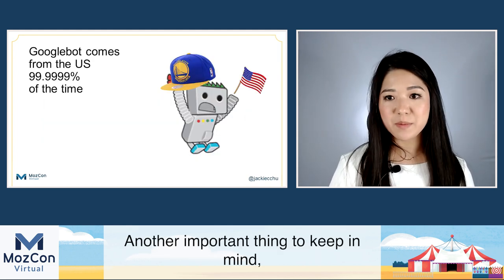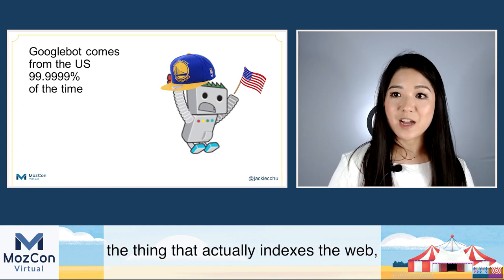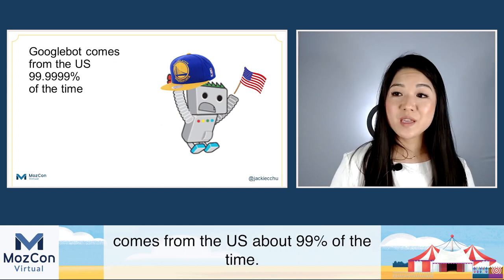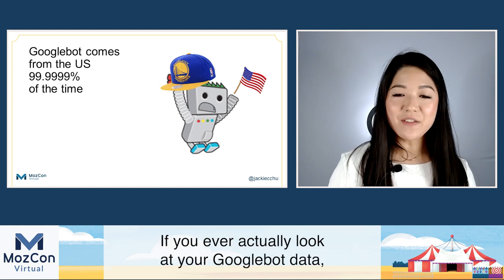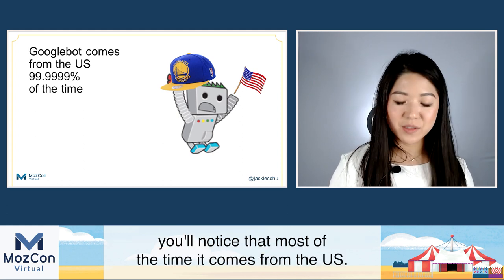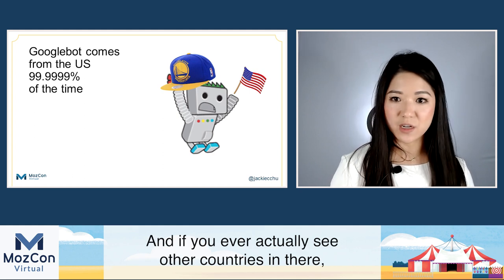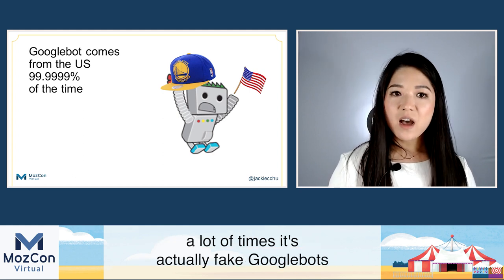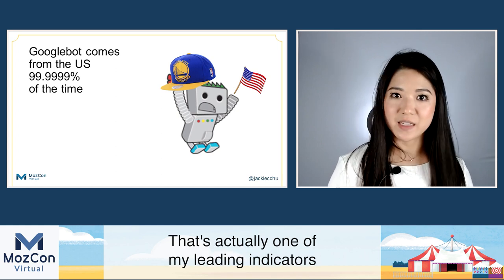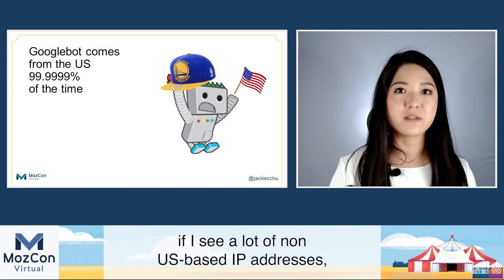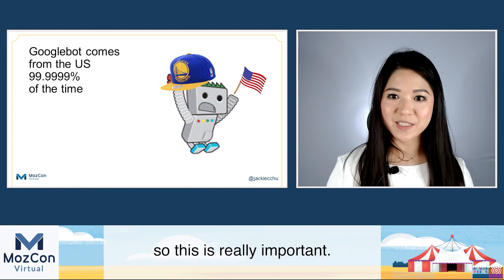Another important reason why this is a bad idea: Googlebot — the thing that actually indexes the web — comes from the US about 99% of the time. If you ever look at your Googlebot data, you'll notice most of the time it comes from the US. If you ever see other countries in there, a lot of times it's actually fake Googlebots and your data is dirty — that's actually one of my leading indicators that there's a data issue if I see a lot of non-US-based IP addresses.